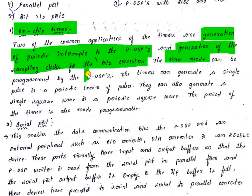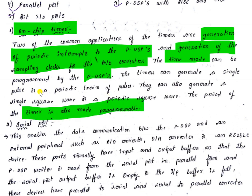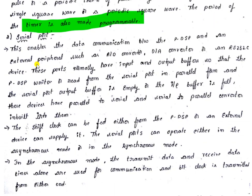The timer mode can be programmed by the programmable DSP. This timer can generate a single pulse or a train of pulses, and may also generate a single square wave or a periodic square wave. The time period of the timer is also programmable and can be varied using a programmable period register.